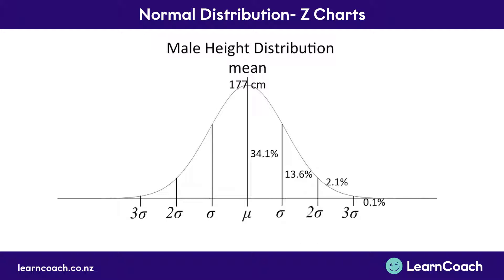But if that is you, let's learn how to use a z-chart when talking about normal distribution. In the last video, we looked at male height distribution. We learned that we had a mean, and we also learned that we had various standard deviations. One standard deviation was 34.1% away from the mean, two standard deviations was 13.6%, three standard deviations was another 2.1%, and 0.1% of the whole population was outside three standard deviations away, where standard deviation is just a measure of how spread out this bell curve was.